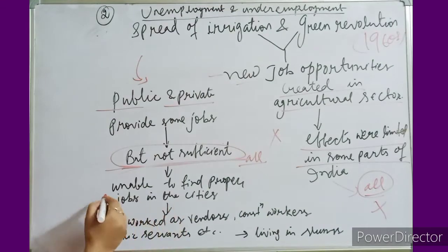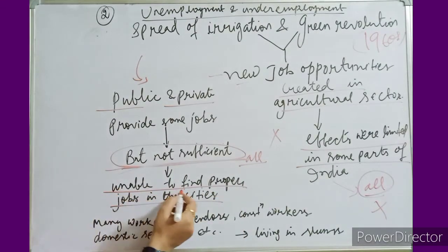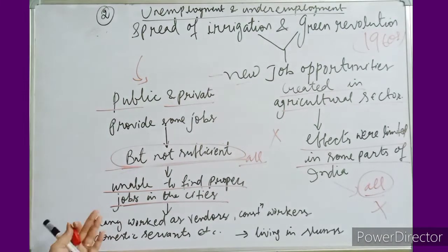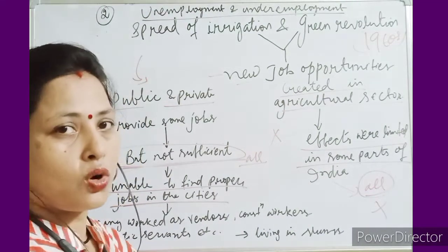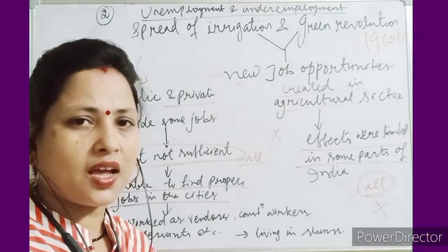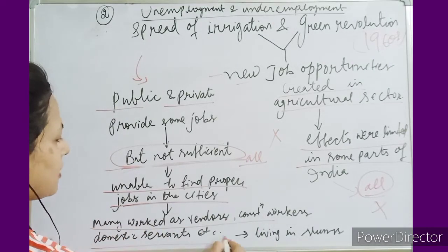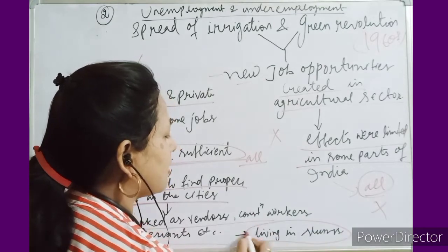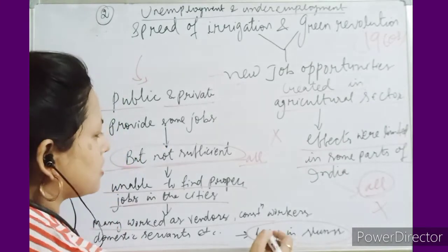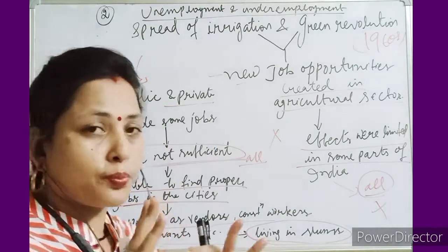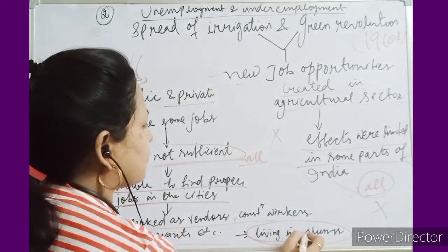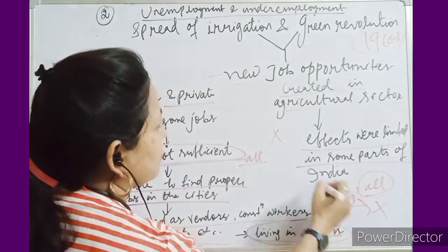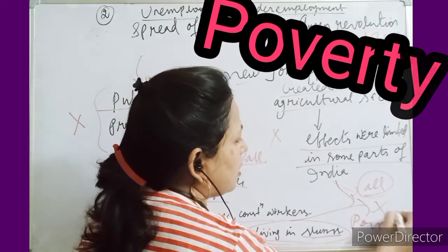Since these jobs were not sufficient, people were unable to find proper work in the city. So they started working in different kinds of work — as vendors, construction workers, domestic servants, rickshaw pullers, and cobblers. This led to them living in slum areas. Both the rural and urban sectors failed to provide proper and enough jobs, ultimately resulting in poverty.